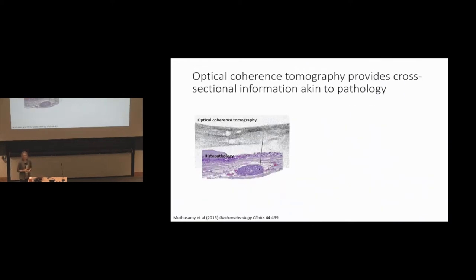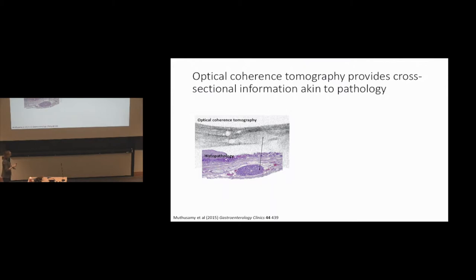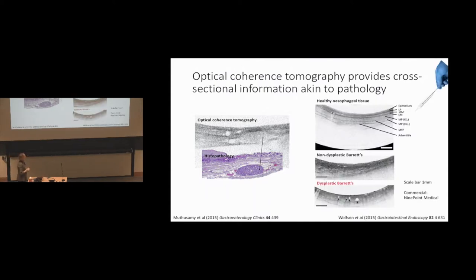Recent advances from telecommunications have allowed us to adopt these imaging contrast mechanisms in endoscopy. One example is optical coherence tomography, which is quite similar to ultrasound — but essentially doing ultrasound with light instead of sound, using interferometry of coherent light delivered via a single fiber optic. You get cross-sectional images, and even commercial systems can show the stratified epithelium of the esophagus — as you go towards Barrett's you get a disordered structure, and further towards a dysplastic case you see features of dysplastic glands that can be identified.